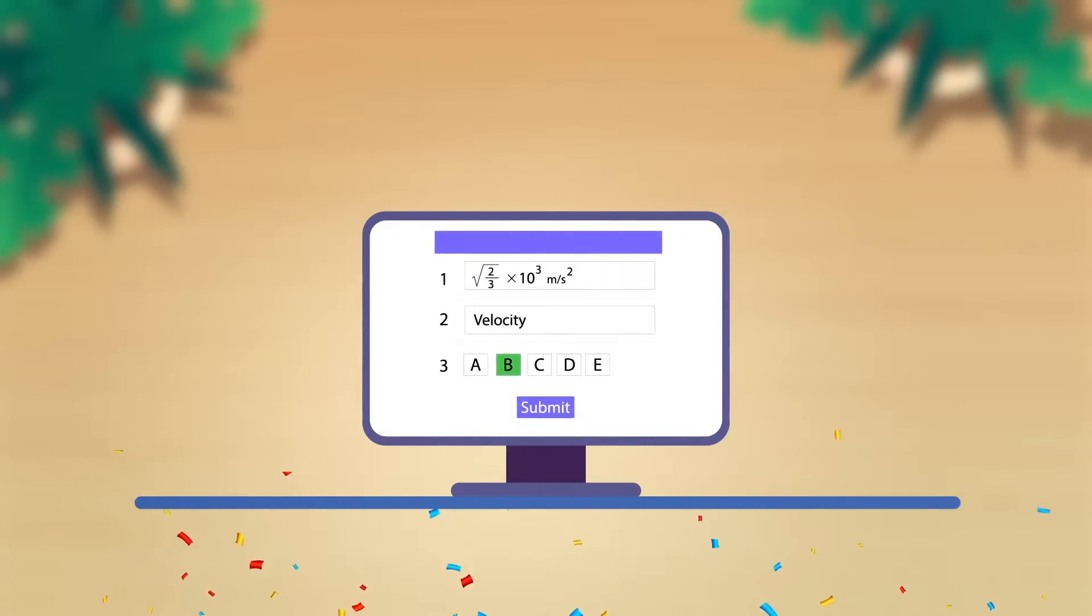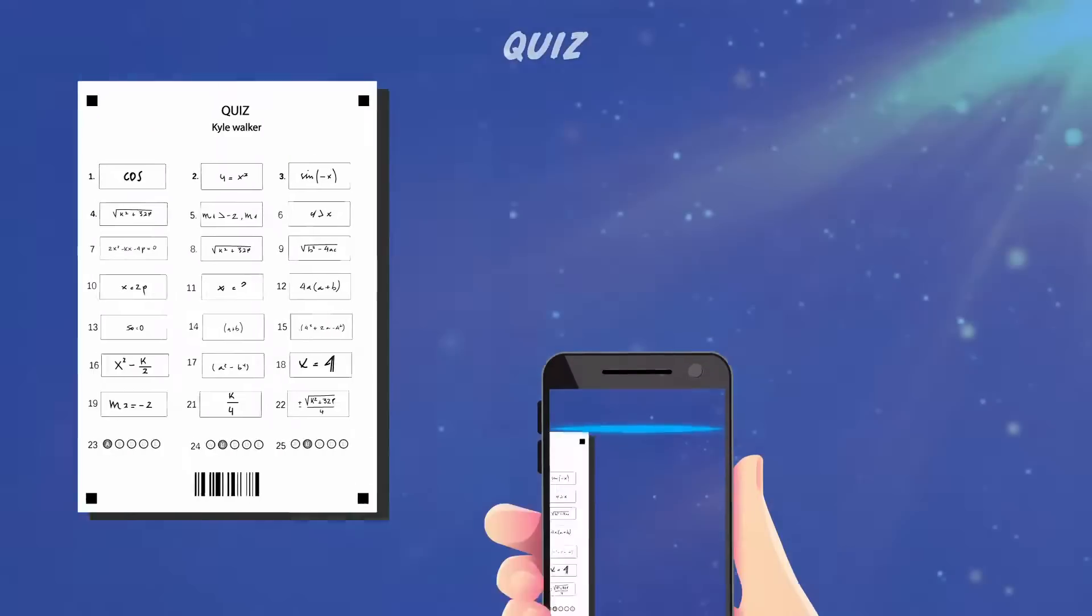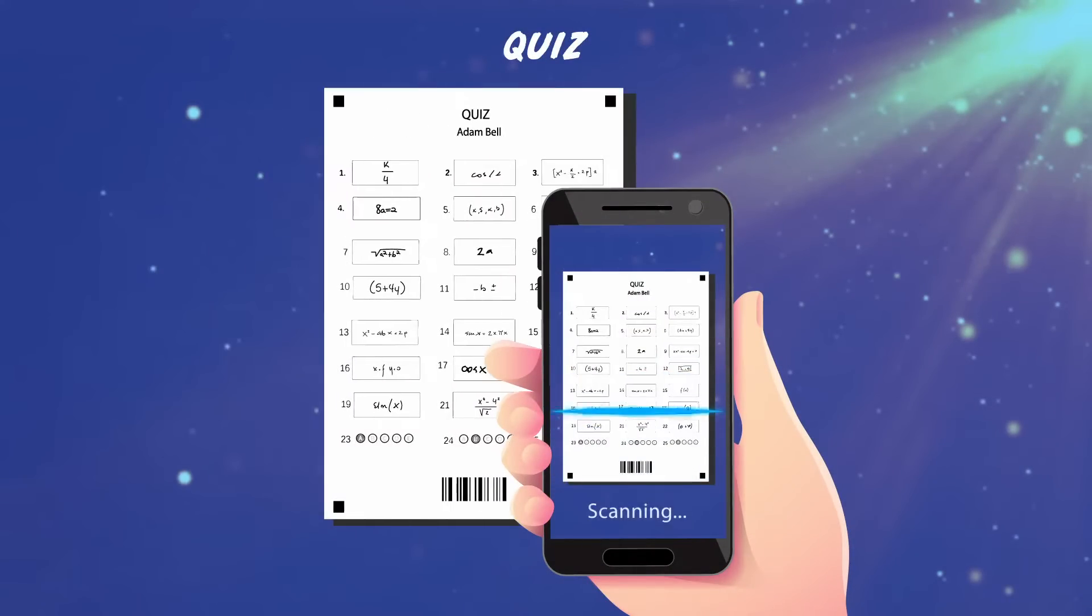SwiftGrade automatically grades both online and paper-based assessments. For paper assessments, simply point your phone at them and your grading is done.